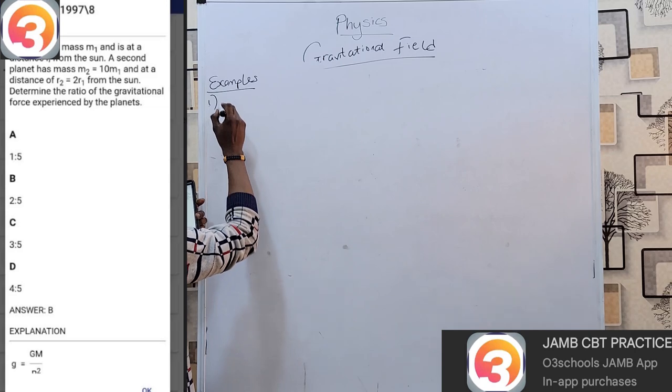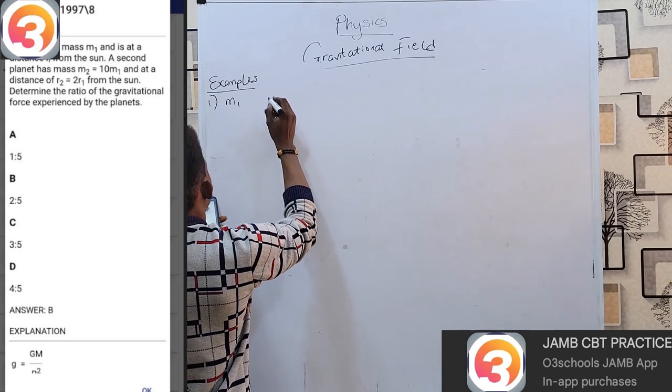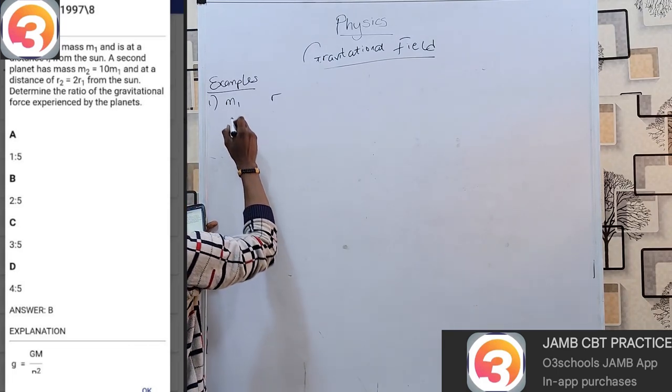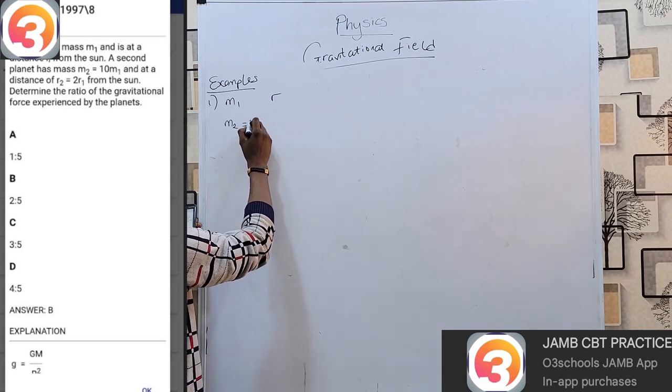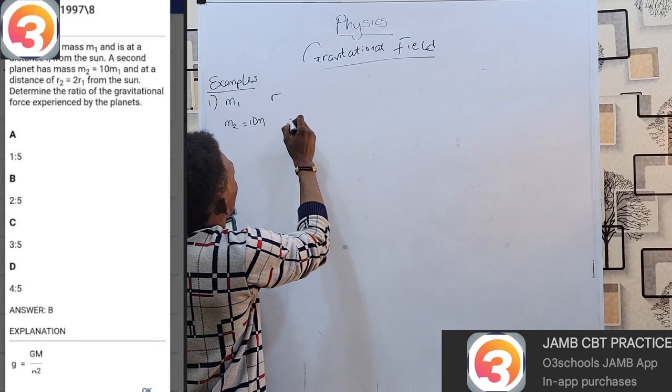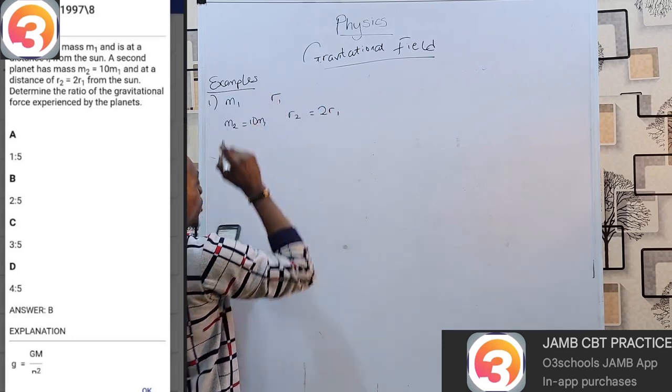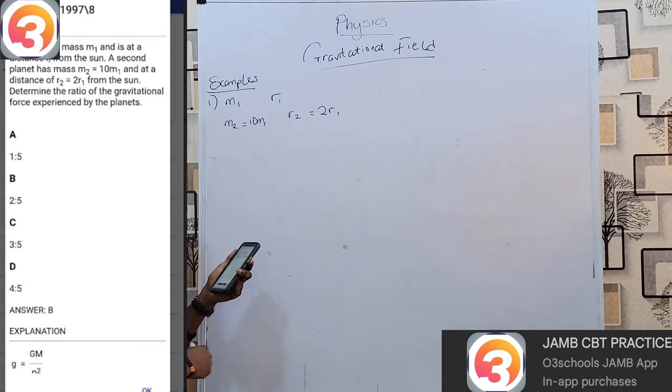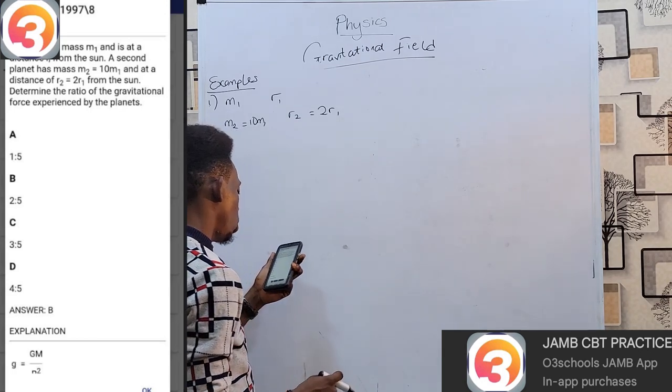This is our first example. You can find this in your JAMB app, 1997 question number 8. A planet has mass m1 and is at a distance r1 from the sun, while a second planet has mass m2, and this m2 = 10 m1 and is at a distance r2 = r1 from the sun. We have to find the ratio of the gravitational forces experienced by the planets.